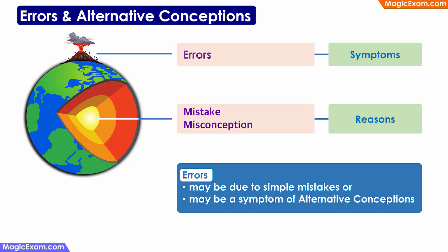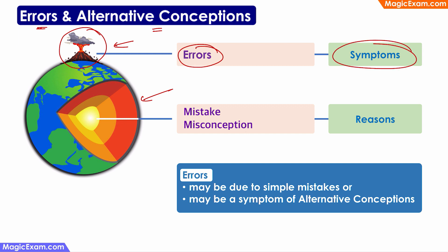Let us now see how errors are connected to alternative conceptions. When we see a volcano, we see hot lava, explosions, and smoke, but the source of those explosions lies deep within the earth. Similarly, when we see errors in something a person is doing or saying, these are just symptoms. The reasons for these errors are deep within the person's mind — they can be because of simple mistakes or because of a misconception.